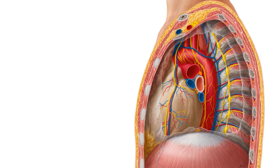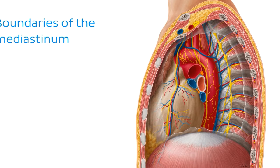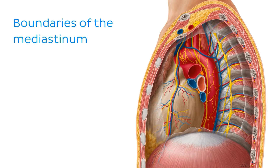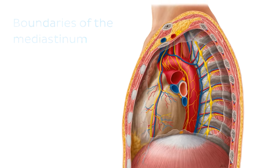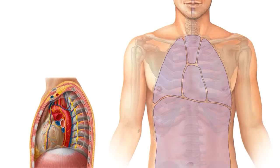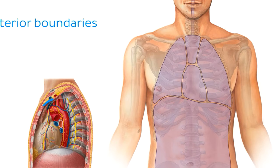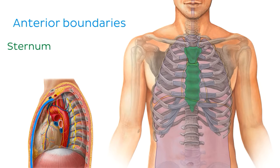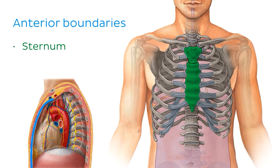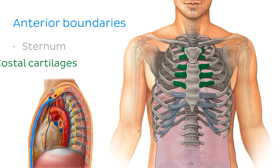So let's take a moment to define some of the anatomical boundaries of the mediastinum as a whole. Anteriorly, the mediastinum is limited by the anterior thoracic wall, which is comprised of the sternum, as well as the costal cartilages of the first to fifth ribs, which you can see here highlighted in green.